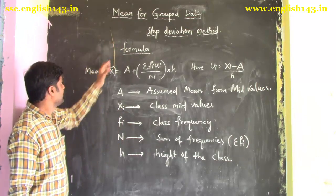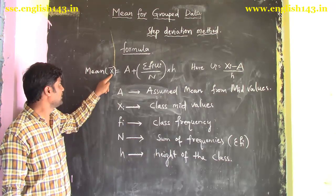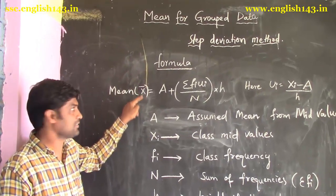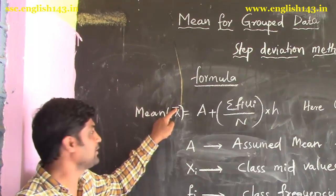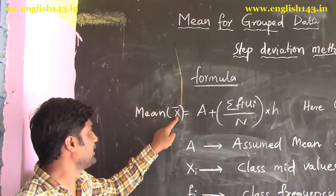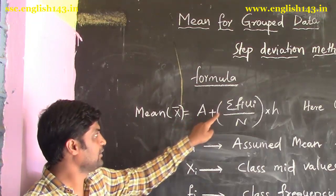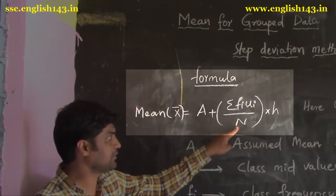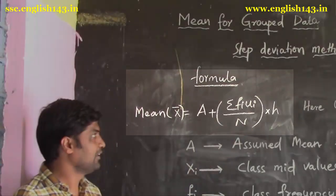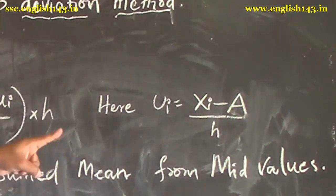The formula is: mean is generally denoted by X bar. The formula is X̄ = a + (Σfi·ui / n) · h, where ui = (xi − a) / h.